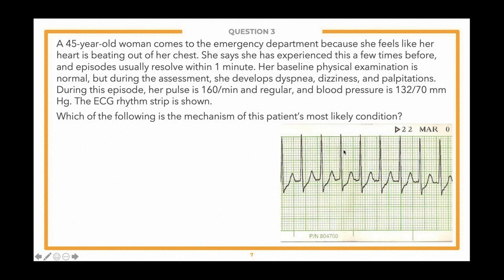The ECG rhythm strip is shown. Which of the following is the mechanism of this patient's most likely condition? I want all of you to start thinking about the important clues in the vignette and lead-in as I hand it off to Bars.